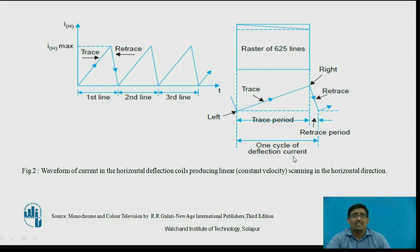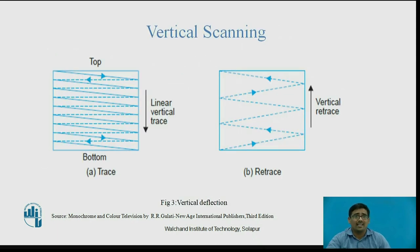One cycle of deflection current is equal to trace plus retrace. For vertical scanning, similar to horizontal scanning, it starts from the top left-hand side and reaches to the right-hand side. The dashed line shows the trace and the dotted line shows the retrace path. The linear vertical trace and retrace are done in the vertical direction.